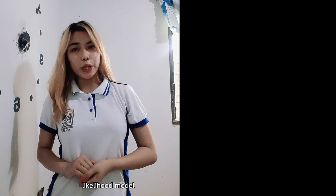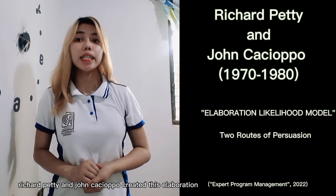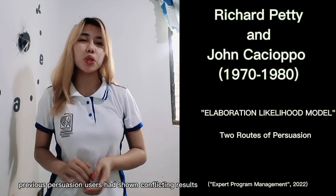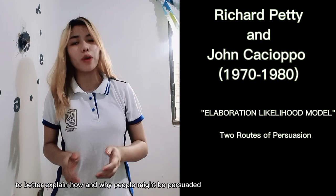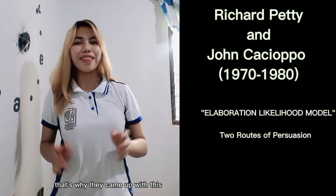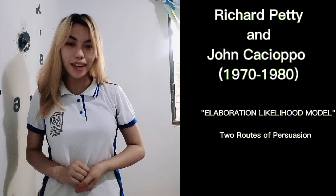Let's start with a quick overview of the Elaboration Likelihood Model. In the 1970s and 1980s, Richard Petty and John Cacioppo created this model. Unfortunately, previous persuasion research had shown conflicting results, so Petty and Cacioppo developed a theory to better explain how and why people might be persuaded to change their minds about a particular message. They proposed two routes of persuasion based on their prior research findings.